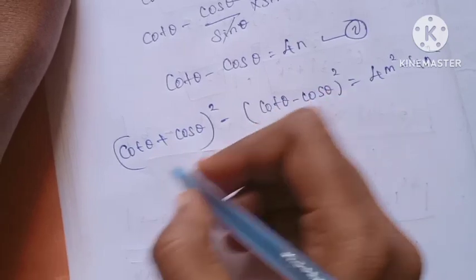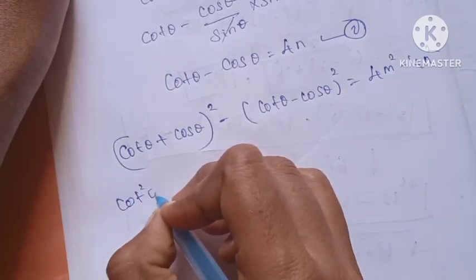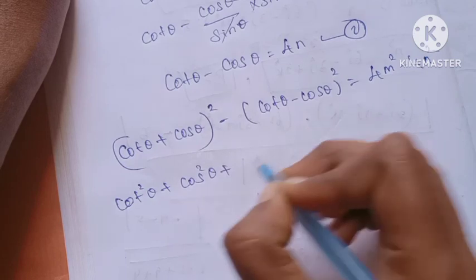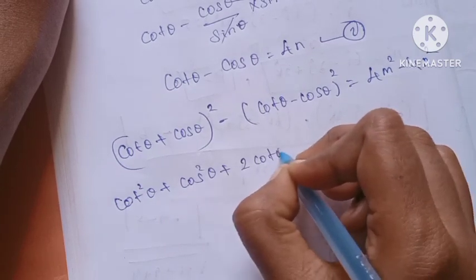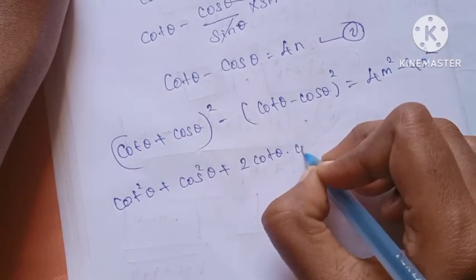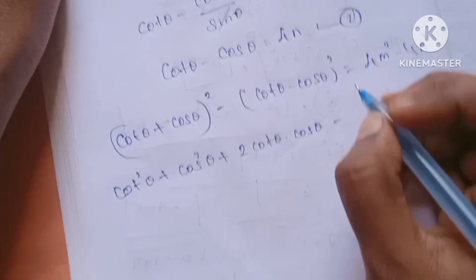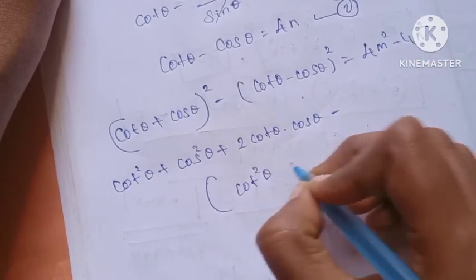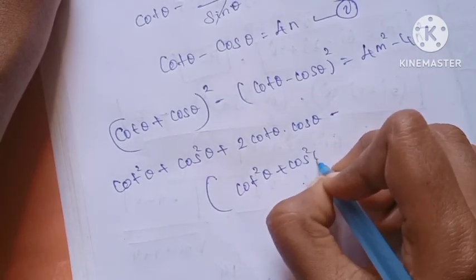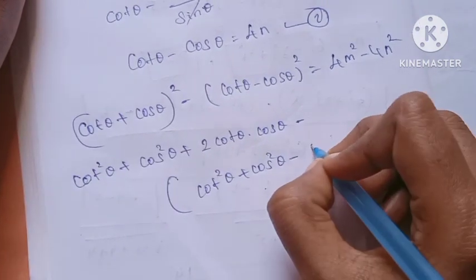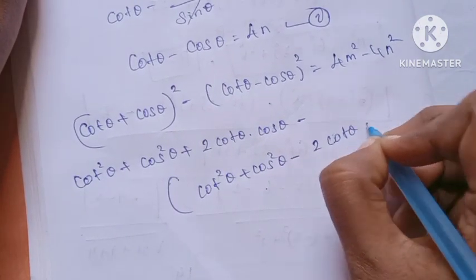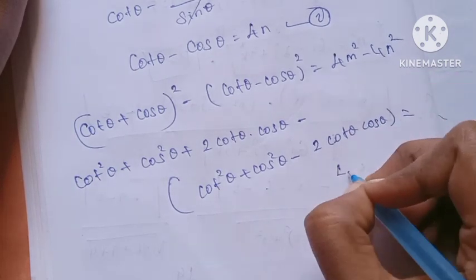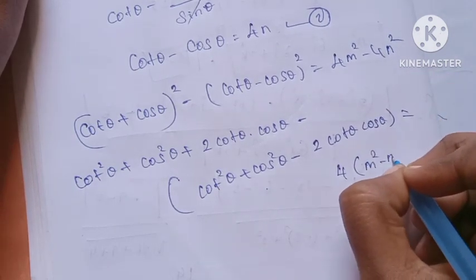If you look at this, you can see (a plus b) whole squared expanded: cos squared theta plus 2 cos theta sin theta. Minus cos squared theta minus cos squared theta minus 2 cos theta sin theta is equal to 4m squared minus 4n squared.